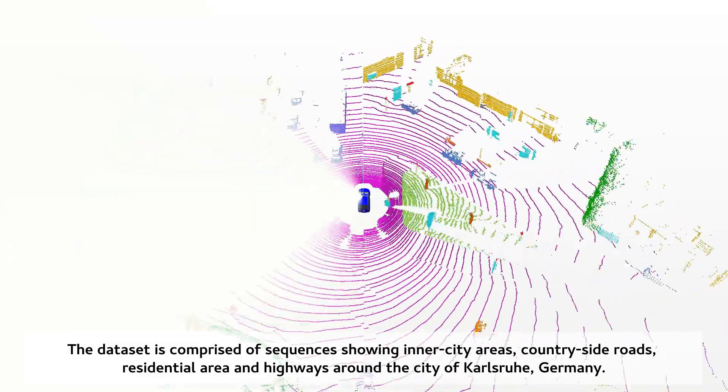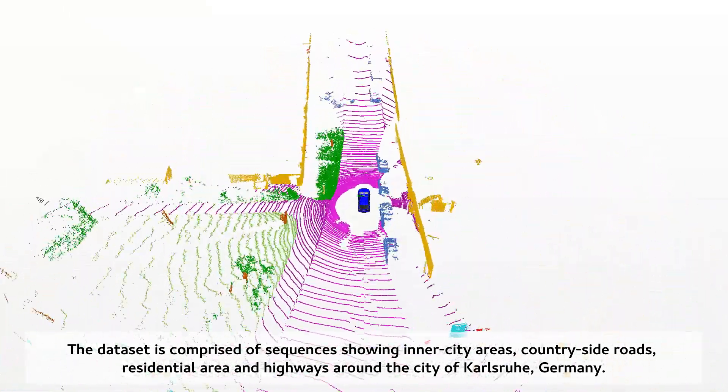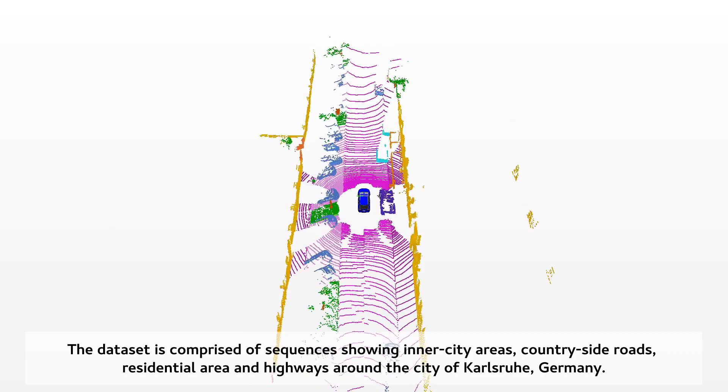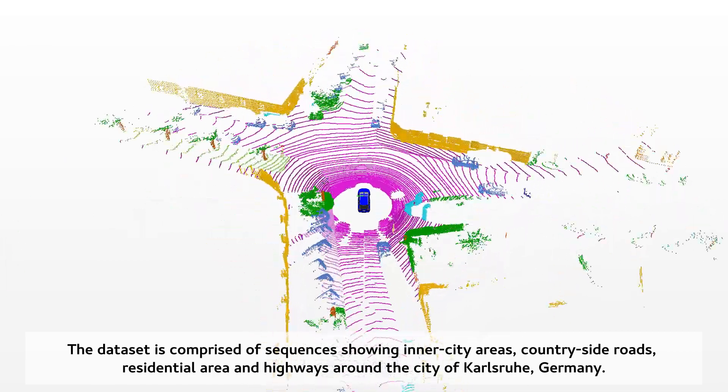The dataset is comprised of sequences showing inner city areas, countryside roads, residential areas, and highways around the city of Karlsruhe, Germany.